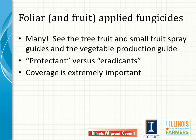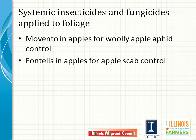Many fungicides are labeled for use on fruits and vegetables, and other disease prevention chemicals such as copper and sulfur compounds may be used primarily as bactericides. Some have limited curative or kickback activity and may be called eradicants, but most are protectants that prevent infections but do not stop or kill existing infections. Even more than insecticides, very thorough coverage of plant tissues is necessary for protectant fungicides to be effective, because fungal spores do not crawl around on leaves and encounter spotty residues as insects might do. Some insecticides and fungicides applied to foliage are at least somewhat systemic—Movento applied to apples will move down the vascular system to trunks and roots and kill woolly apple aphid.